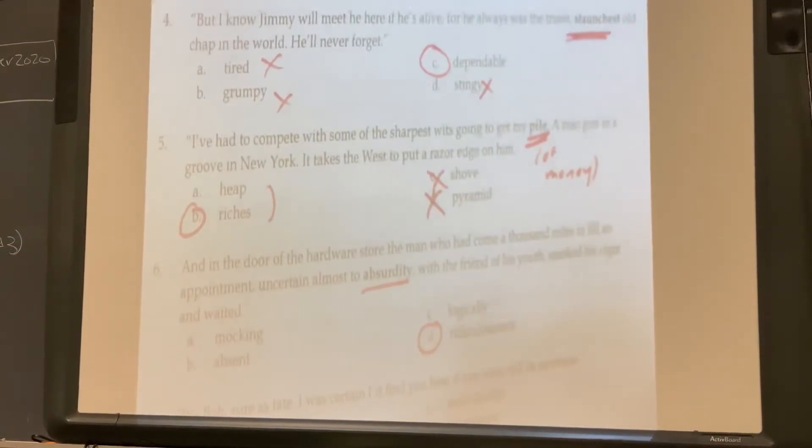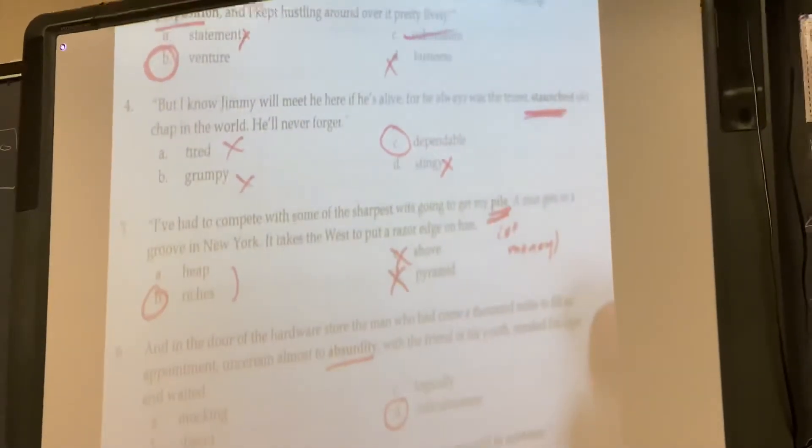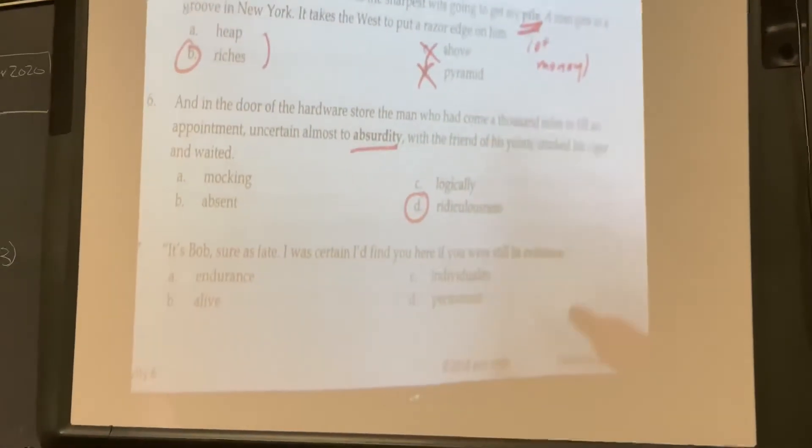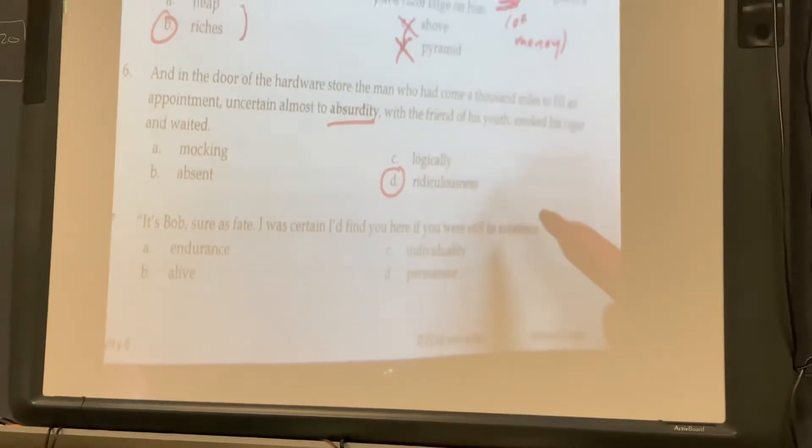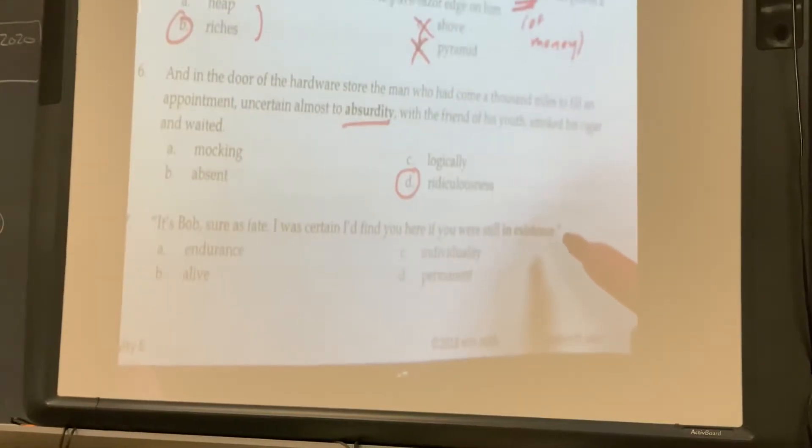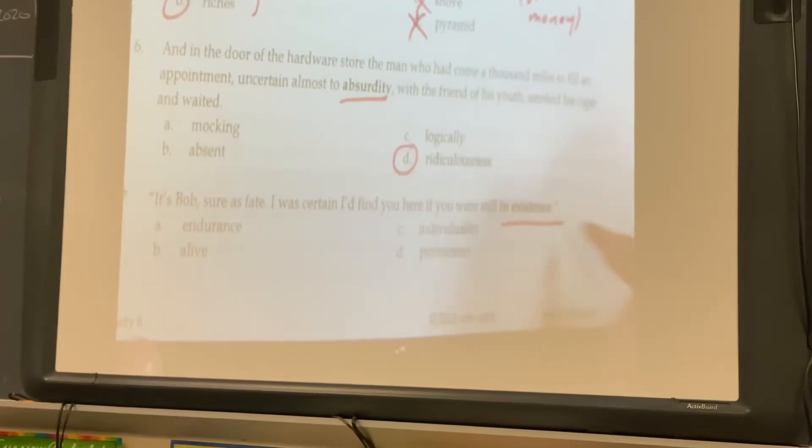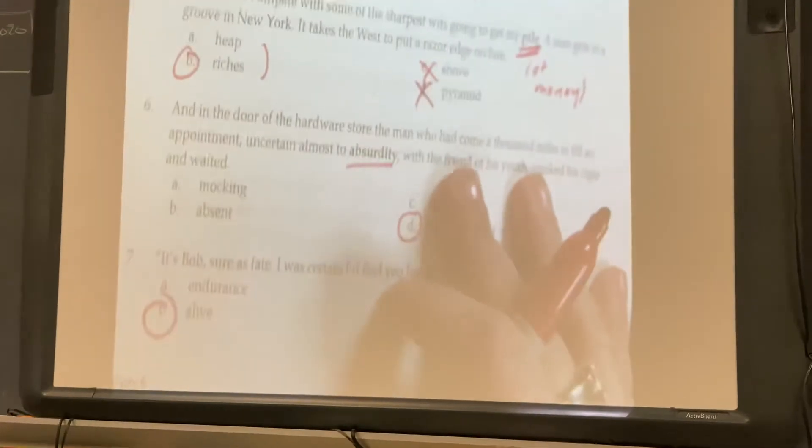Seven: It's Bob, sure as fate. I was certain I'd find you here if you were still in existence. Well, if you were still alive is what in existence means. So I'm going to pick B.